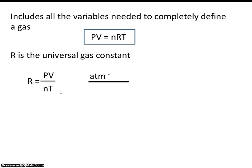Pressure is measured in atmospheres. Volume will be measured in liters. Of course, n is moles. And temperature, of course, has to be in Kelvin. So these will be the units on R.